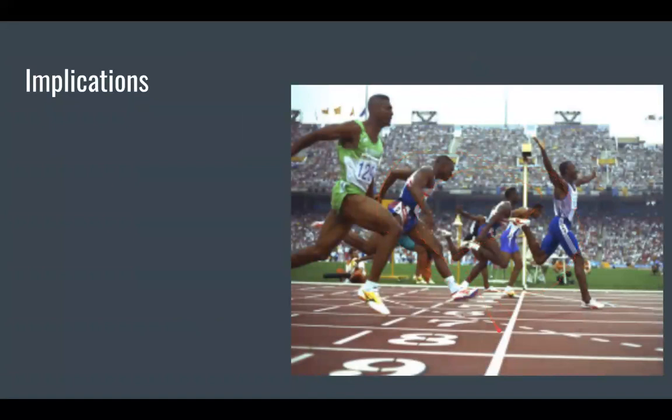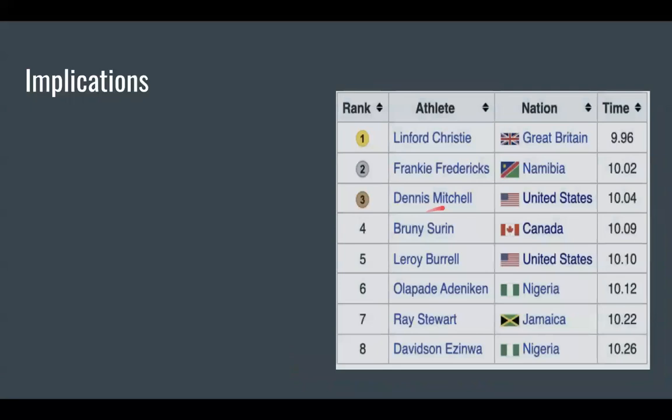Now, for the implications of these findings, I want to show you this picture right here. This is a finish of the men's hundred meter final at the Barcelona Olympics, and it's a very famous photo just because of how close all of these runners were in this final. Now, this table represents the times of that race. I want you to look at second place, 10.02, and sixth place, 10.12. That is a tenth of a second. That is about the same difference between our control protocol and our plyometric.